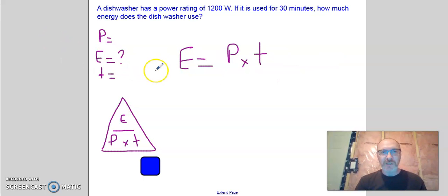Okay, let's jump to the next question. A dishwasher has a power rating of 1,200 watts. If it is used for 30 minutes, how much energy does a dishwasher use? We're asked to find energy. Our power, we're told, is 1,200 watts. Again, you want to follow this form. Write down what you're asked to find. Write down what you're given. Write down the formula. Substitute and solve. We're told that the time is 30 minutes. And we're going to convert that to seconds here in the formula itself. Because remember, the power formula uses seconds.